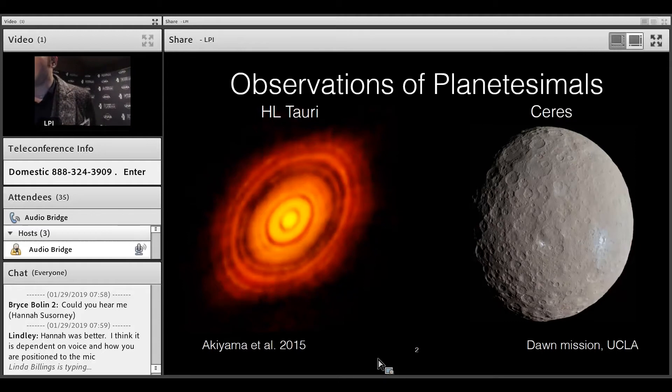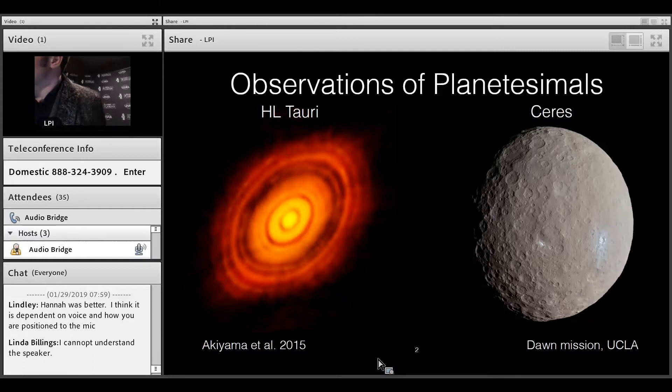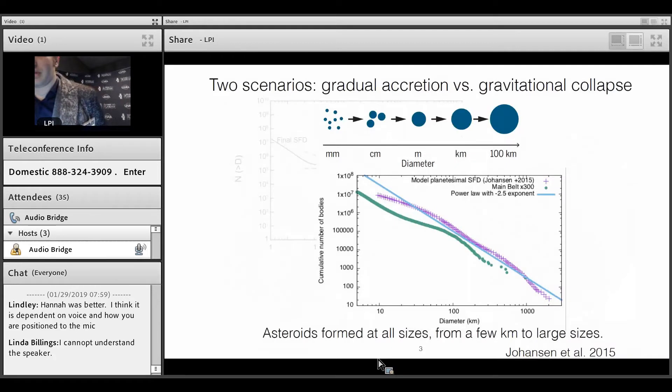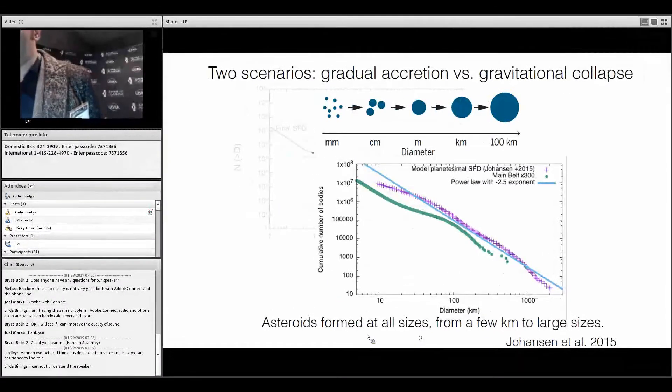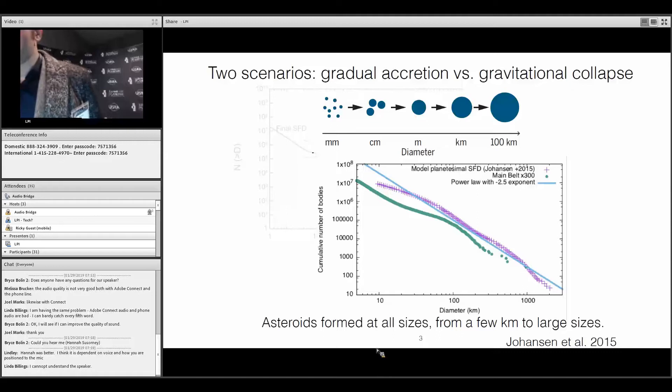We can observe planetesimals around other stars and in our solar system, but we do not know very well how they form. The mechanism by which we see these objects is still unclear. Currently there is one theory which suggests that planetesimals form gradually from small sizes all the way to large sizes of hundreds of kilometers.